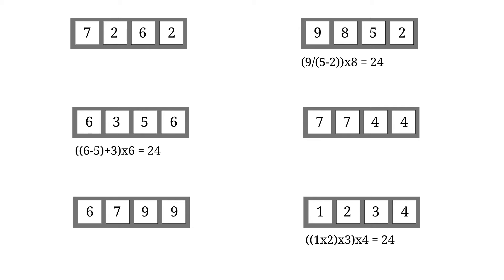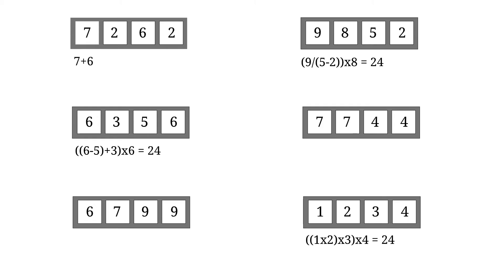Next up, 7, 2, 6, 2. So 7 plus 6 is 13, 13 times 2 is 26, and 26 minus 2 is 24.